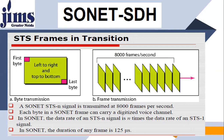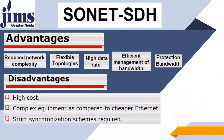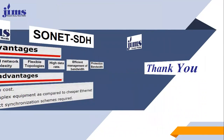A SONET STS-N signal is transmitted at 8000 frames per second, and each byte in a SONET frame can carry a digitized voice channel. The data rate of an STS-N signal is N times the data rate of the STS-1 signal. The duration of any frame is 125 microseconds. Advantages of SONET/SDH include reduced network complexity, flexible topologies, high data rate, efficient bandwidth management, and bandwidth protection. Disadvantages include high cost, complex equipment compared to cheaper Ethernet, and strict synchronization schemes. Thank you very much.